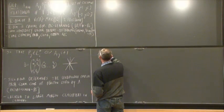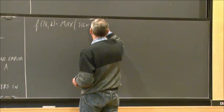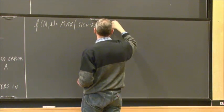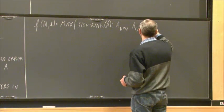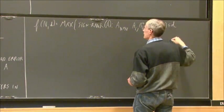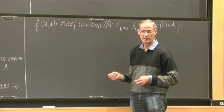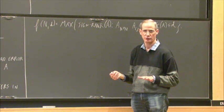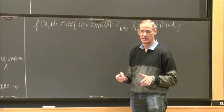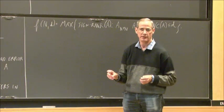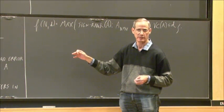Let f(n, d) be the maximum possible sign rank of an n by n sign matrix A where the VC dimension of A is at most d. A random matrix question: what is its sign rank? It is going to be linear, and it's interesting — perhaps difficult — to understand the constant in that linear relationship. Maybe it doesn't matter much for applications since one often takes logarithm anyway.